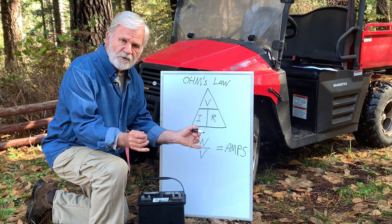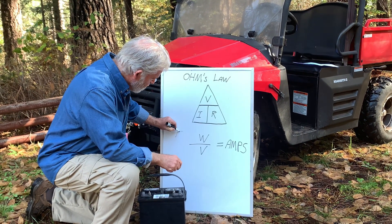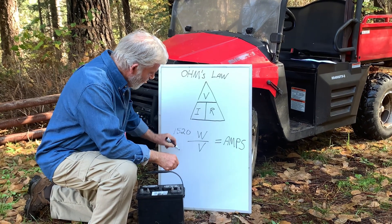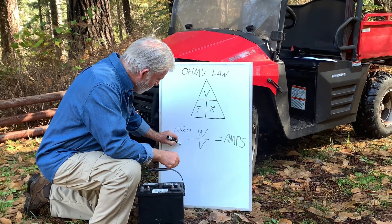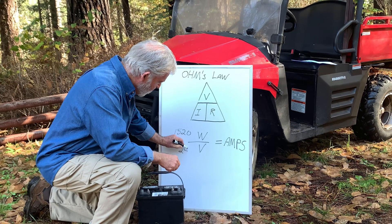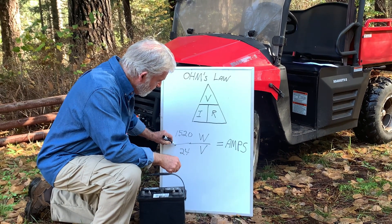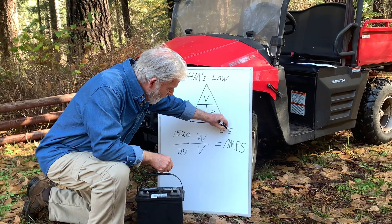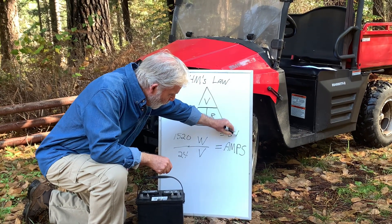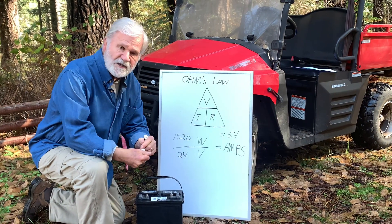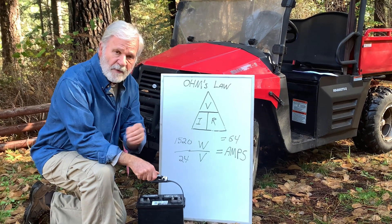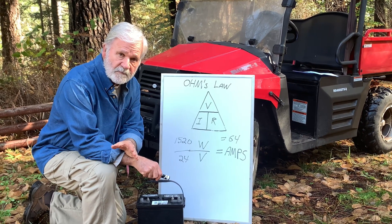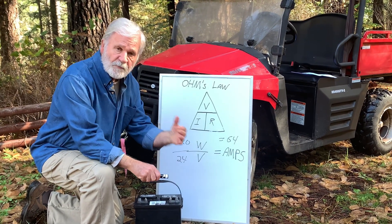So what we need to do is take our 1520 watts, divide it by the 24 volts that are in our battery bank, and you come up with about 64 amps. That's how many amps our battery bank has to deliver every day to meet the energy requirements of our house.